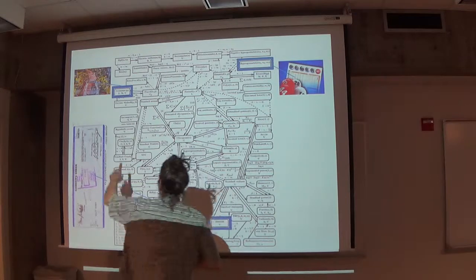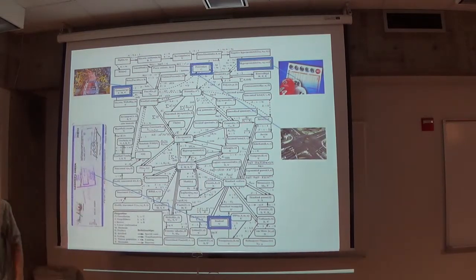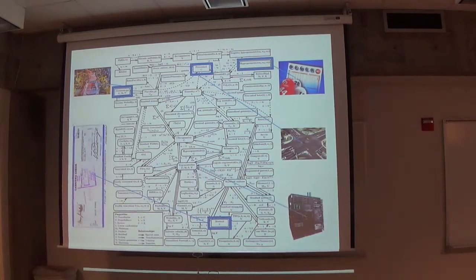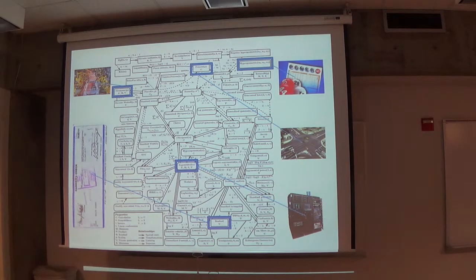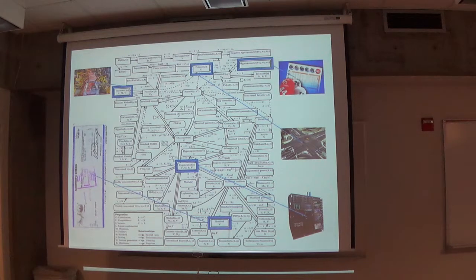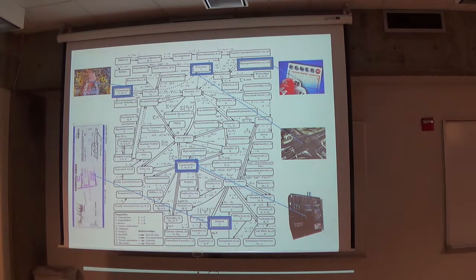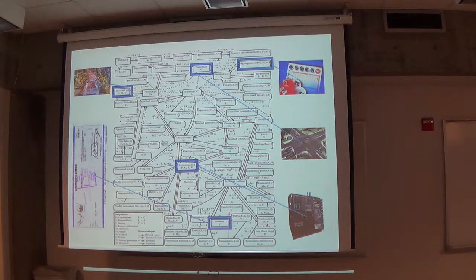The geometric distribution — you'll actually see it occur in the craps quiz for Thursday, the gambler's ruin quiz. You might have to play craps a long time to win your dollar back if you keep losing. You keep playing craps until you win — it might take one roll, two, three, four, five, and so on. That's a geometric situation.